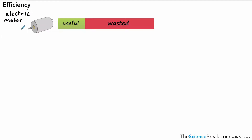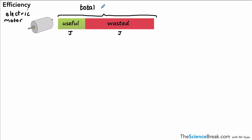Here I've got a diagram of an electric motor, and on the right of that diagram I've represented useful energy transfers and wasted energy transfers to see how efficient it might be. Both bars together — the red and the green — tell you the total energy input for this motor. You can see a small proportion of the energy that goes in is actually useful; the rest is wasted.